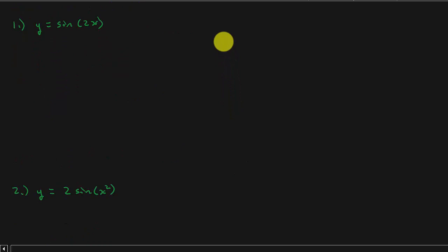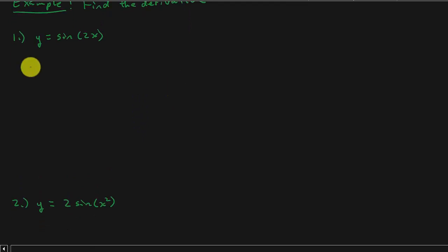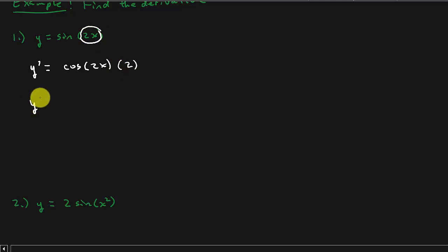Just remember: derivative of sine is cosine; derivative of cosine is negative sine. So let's look at the first problem. We want to find the derivative. What's the derivative of sine? It's cosine times the derivative of what you're taking the sine of. So what's the derivative of 2x? It's 2. And so we get y prime is 2 cosine 2x — and there's your answer.